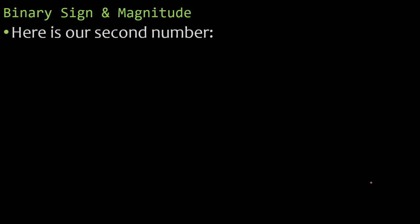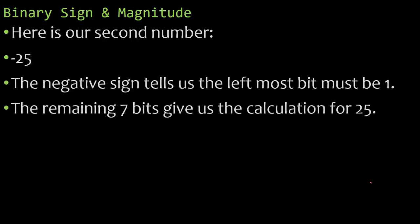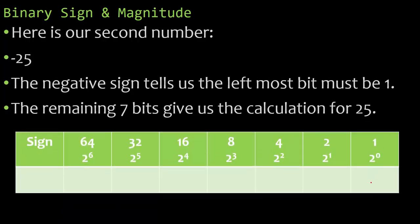Our second example would be great if it was a negative number. Here's one, negative 25. The negative sign tells us the leftmost bit must be a one. The remaining seven bits will give us a calculation for 25. I know right away because I have a negative sign, it's going to be a one. Now I'm looking for the value of 25, same calculation. So that is our binary sign and magnitude for negative 25. The only difference is the sign. In the previous problem we had a zero indicating positive. This time we have a one. The binary value of these seven bits is exactly the same.